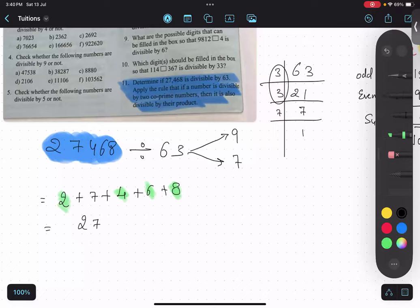So 27 is divisible by 9, so 27468 is also divisible by 9.